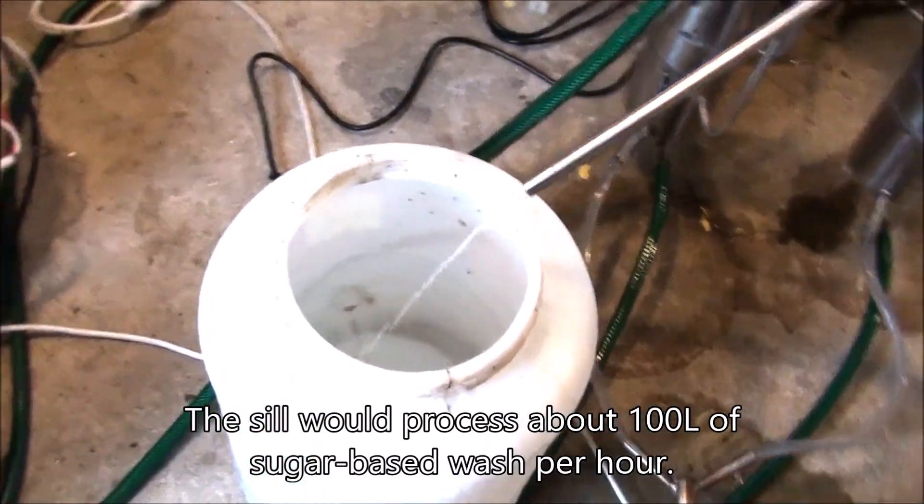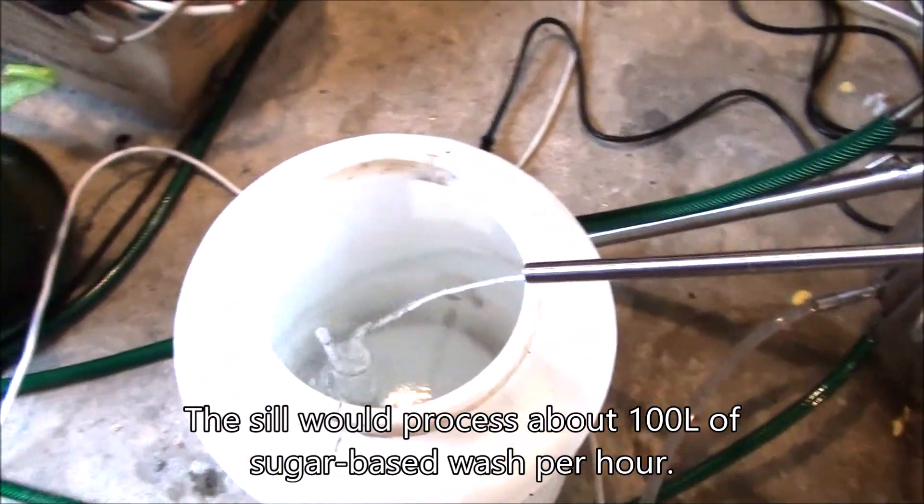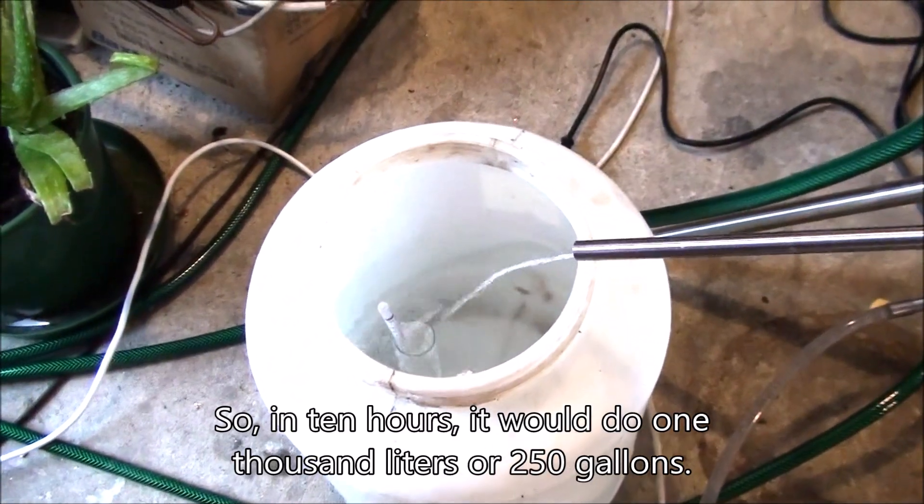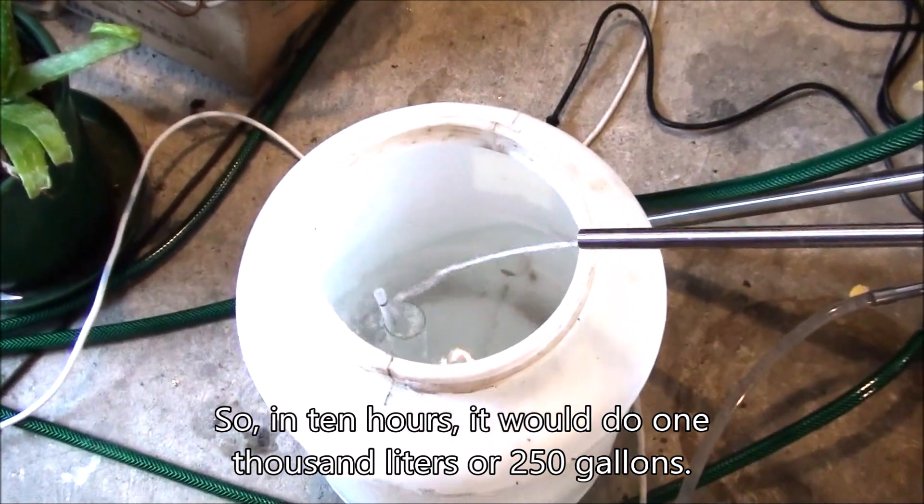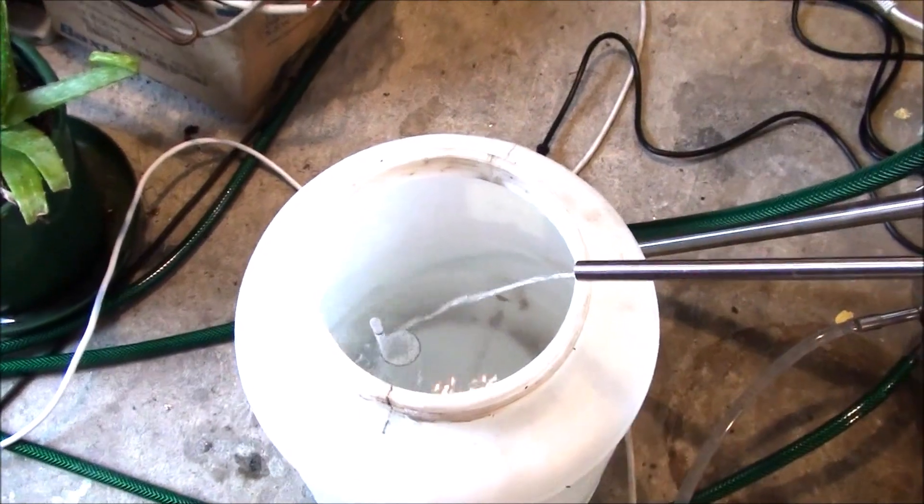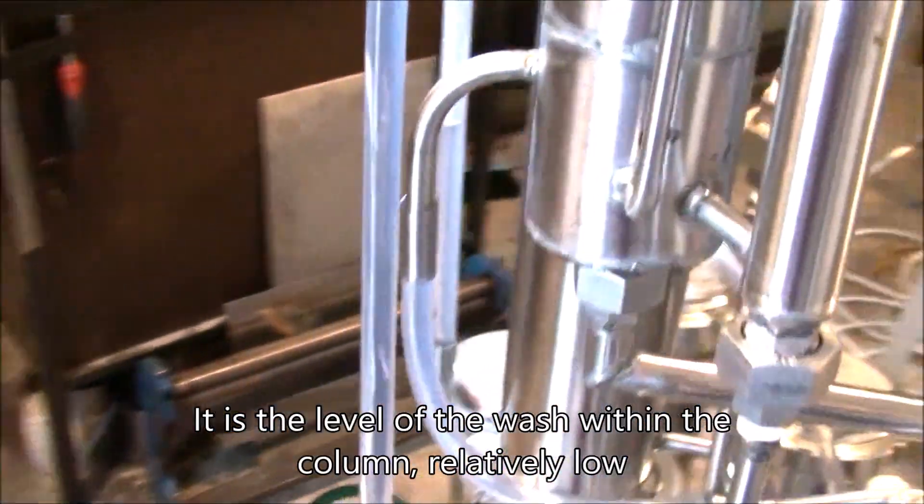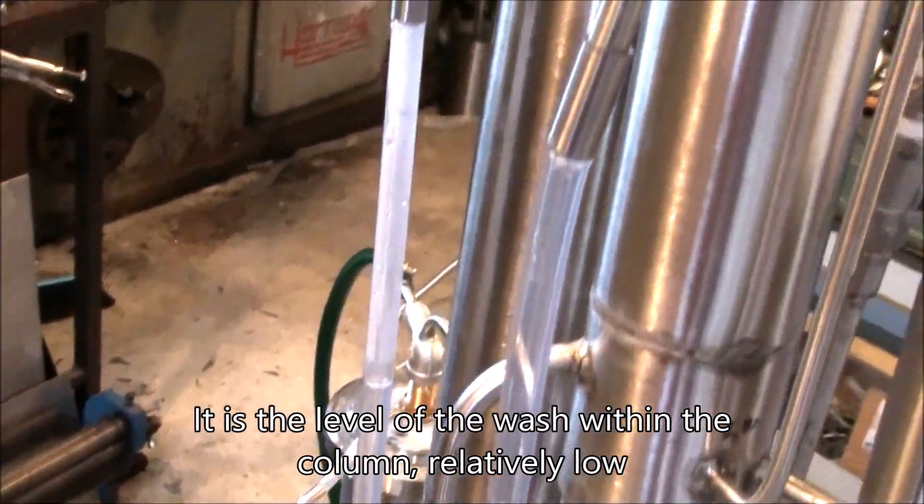The still will process about 100 liters of wash per hour, so in ten hours that would be 1000 liters or 250 gallons. This is the level of the wash within the column - relatively low. I need to increase the flow; it would be much easier to control with a proper 1000 liter drum.